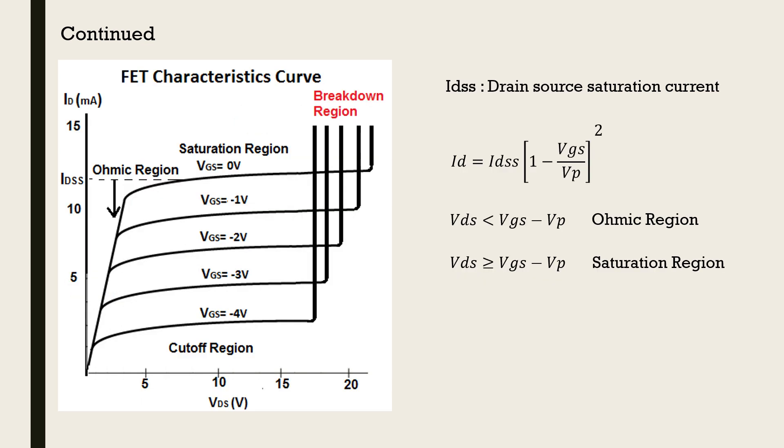From the inference of the previous slides, we can analyze the output characteristics of FET. The curve can be divided into three parts. The ohmic region is when VDS is less than VGS minus VP and then it enters the saturation region. Further increase in VDS will make the J-FET to break down. The drain current in saturation region is given by the equation ID is equal to IDSS multiplied with 1 minus VGS upon VP the whole square, where IDSS is equal to drain source saturation current.